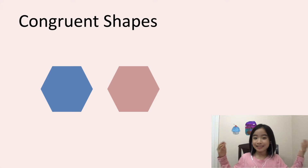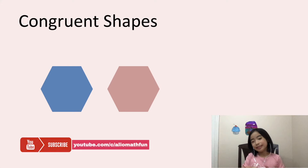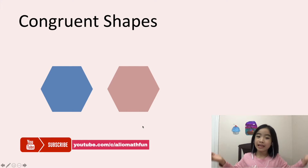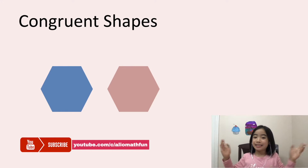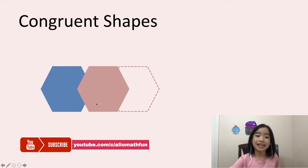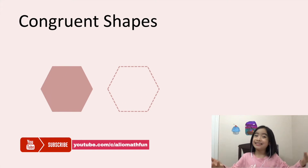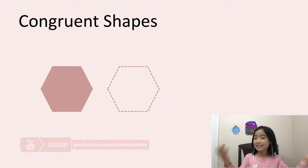Now let's look at this example. Are these shapes congruent? Well, they're both hexagons. And if I slide the pink hexagon on top of the blue hexagon, it matches perfectly. So these hexagons are congruent shapes.